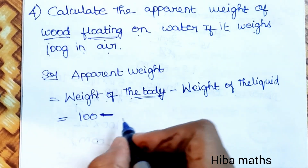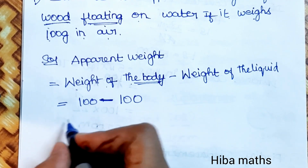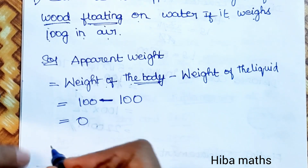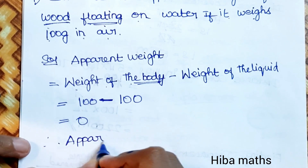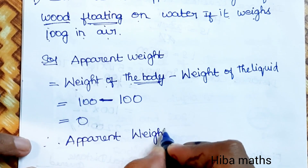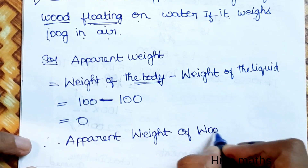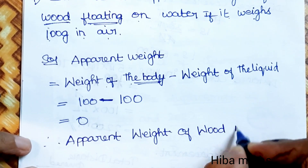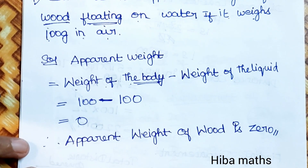Since the wood is floating, the weight of liquid displaced equals the weight of the wood, which is also 100 grams. So apparent weight = 100 − 100 = 0. Therefore, the apparent weight of the wood is 0. Thank you so much for watching.